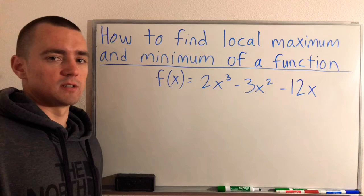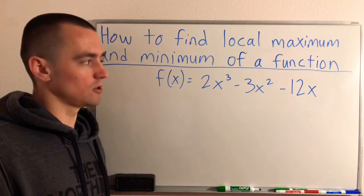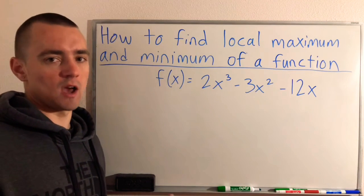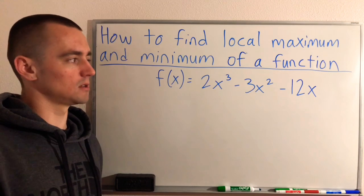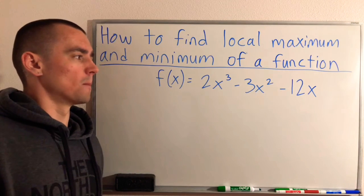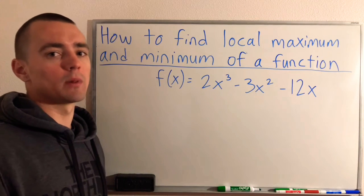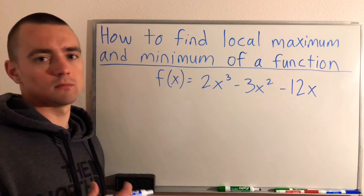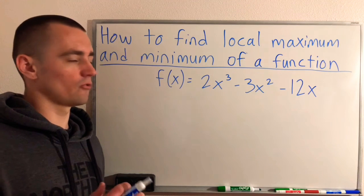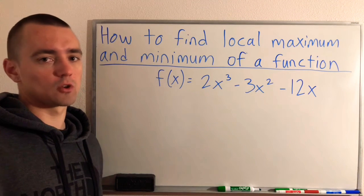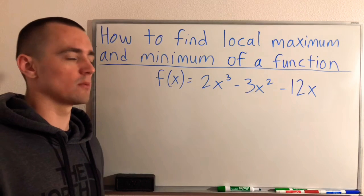When you're trying to find these local or relative maximum and minimum values, you're going to start by figuring out the increasing and decreasing intervals, just like we did in the previous video. And then you're going to take it a step further by applying the first derivative test to figure out if each of these critical numbers within the function is a local maximum or a local minimum.